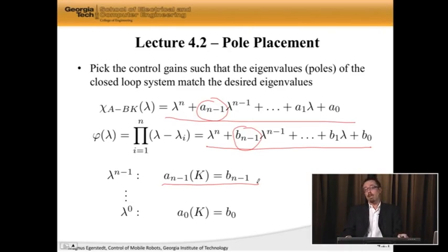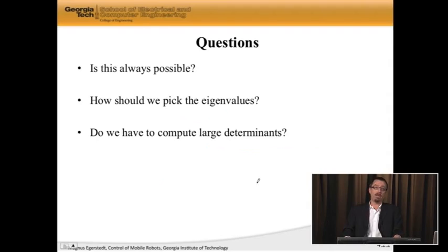It seems magic, like we can control anything. The first question is: is this always possible? The second question is, where do these desired eigenvalues come from?